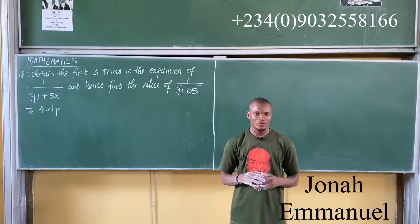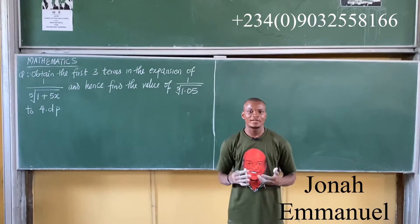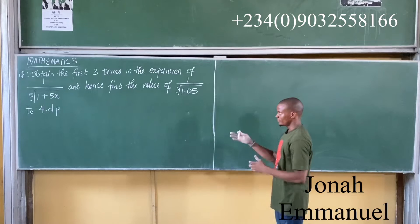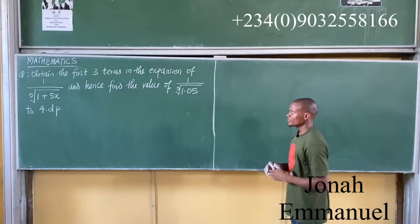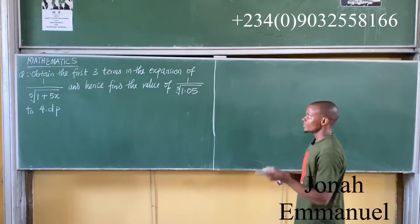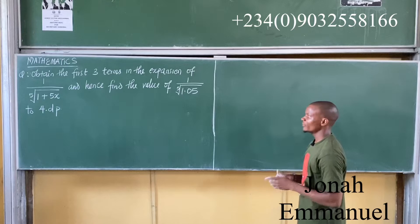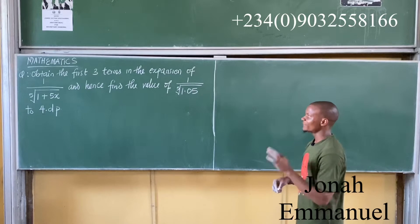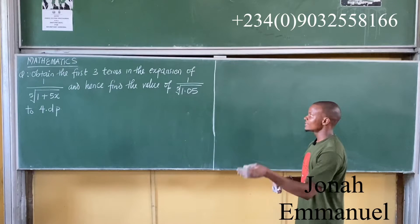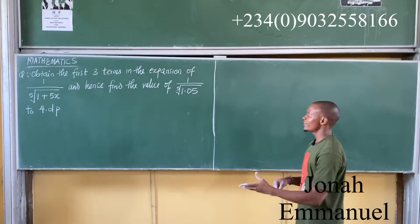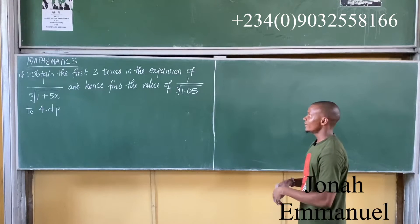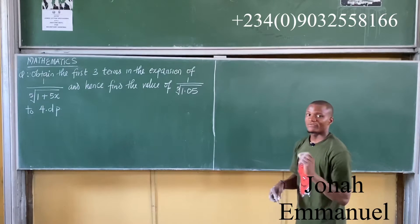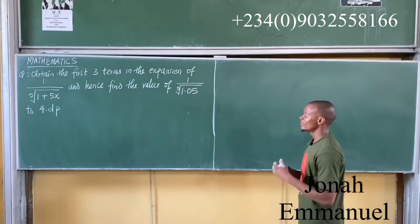Hello and welcome to Excellence Academy. Let's look at another problem on binomial expansion. This one says: obtain the first three terms in the expansion of 1 all over the fifth root of 1 plus 5x. And hence, find the value of 1 all over the fifth root of 1.05 to 4 decimal places.